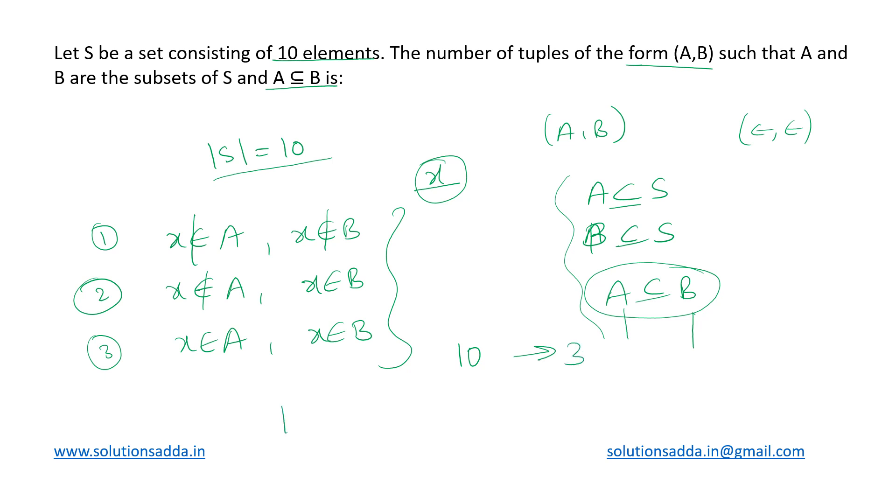So this would become 10 raised to 3 or 3 raised to 10—we need to identify which. Each of these 10 elements—the first element has three choices, the second element again has three choices, the third element also has three choices, and so on. So this becomes 3 to the power of 10, which is 59,049. That is the answer: the number of tuples you can create out of this set S.